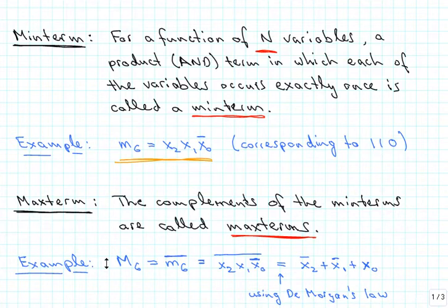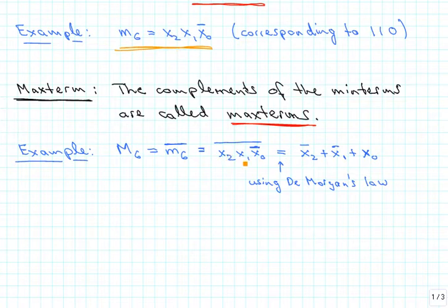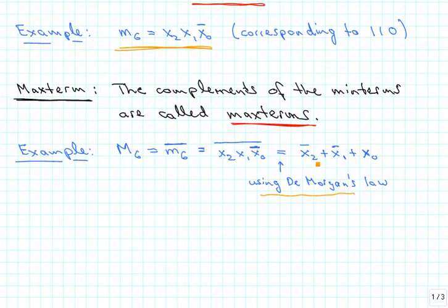Similar to min terms, we can also define max terms, and those are defined as the complements of the min terms. So when we make capital M6 — the capital M stands for max terms — we start out with little m6, which is the min term, and complement it. Using De Morgan's law, this negated form can be written as x2 complement OR x1 complement OR x0 complement, where the pluses are OR gates.